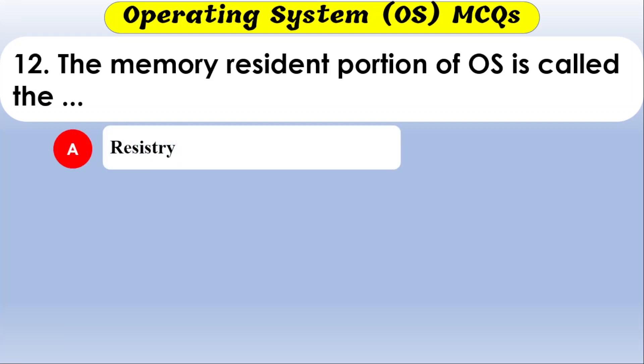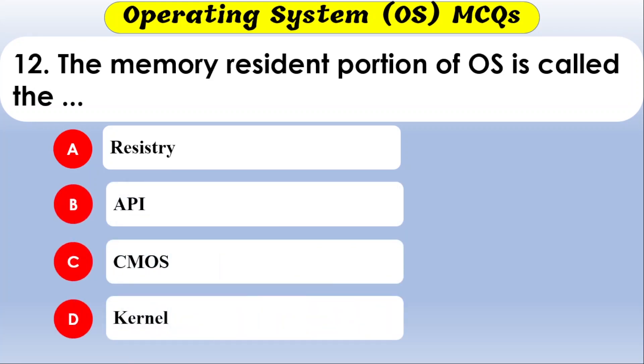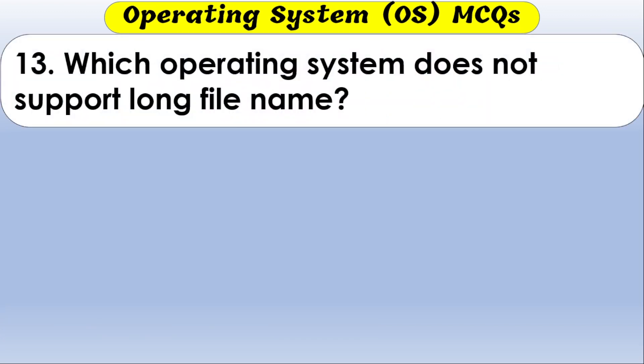The memory-resident portion of an OS is called — the options include API, CMOS, and kernel. The correct option is kernel.